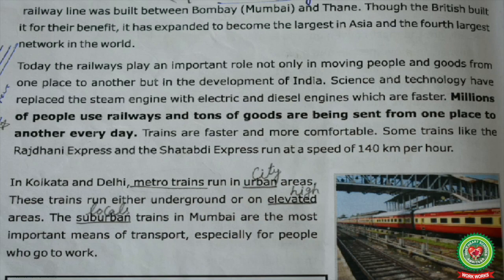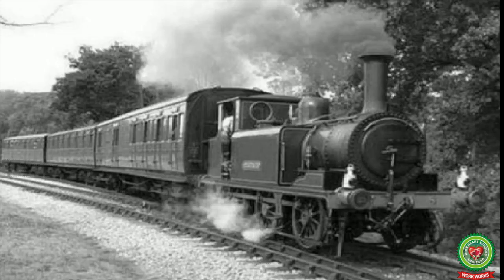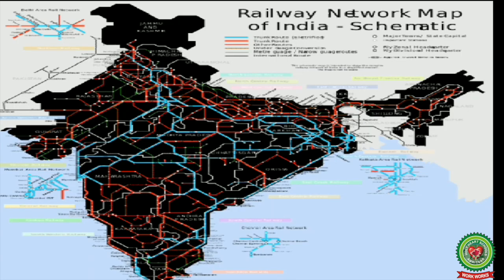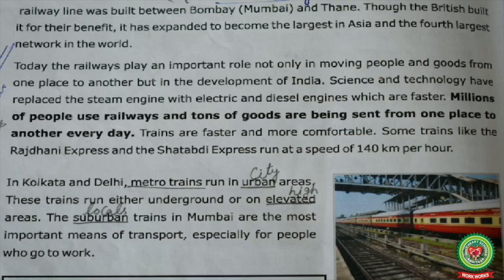The British introduced railways in India in 1853 and the first railway line was built between Bombay, present-day Mumbai, and Thane. The British built it for their own economic use so that they could get more benefit from India. But today it has become the largest railway network in Asia and the fourth largest railway network in the world. Let's move to the second paragraph on page number 108.